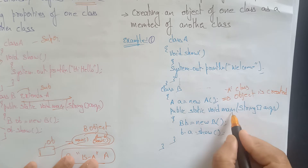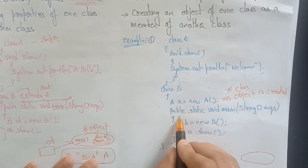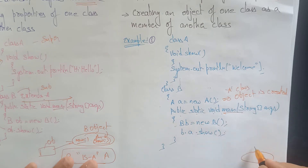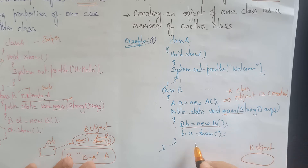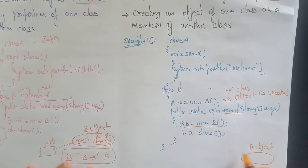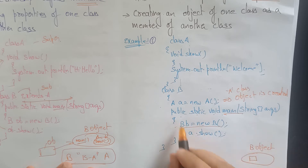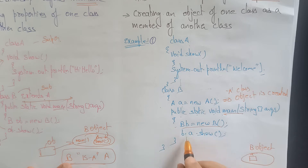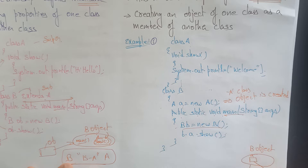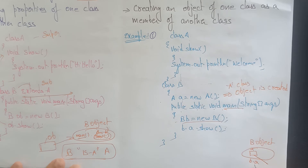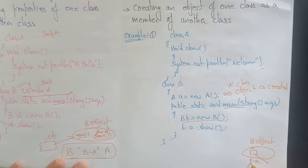A B class object is created, and within B, an A class object is created with reference 'a'. Then we call b.a.show(). So B object is created, A object is created inside B, and using reference b then reference a, we call the show method.